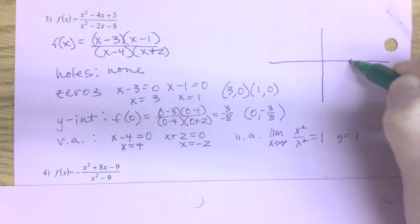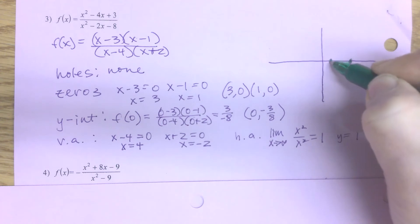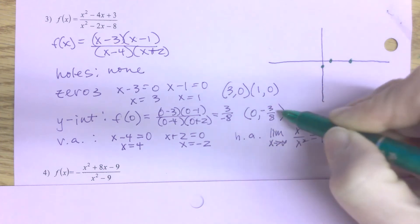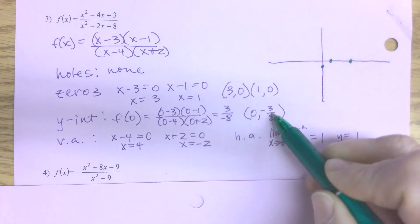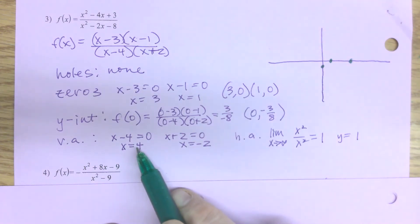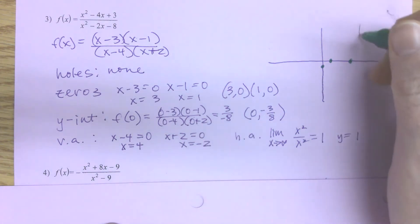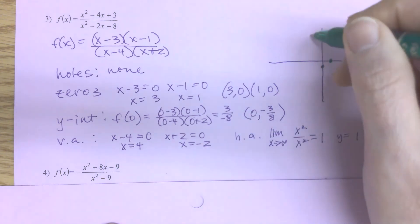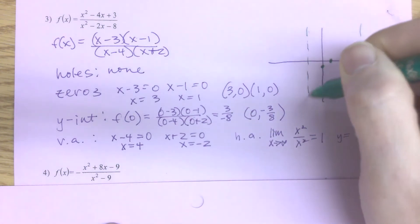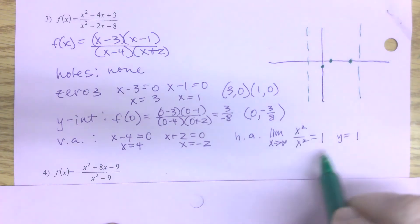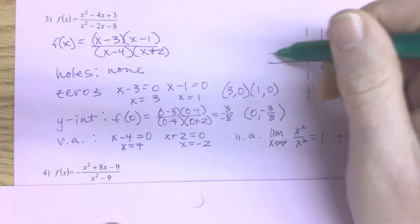Now I'll put that all together. I have zeros at (3, 0) and (1, 0), a y-intercept at (0, -3/8), vertical asymptotes at x = 4 and x = -2, and a horizontal asymptote at y = 1.